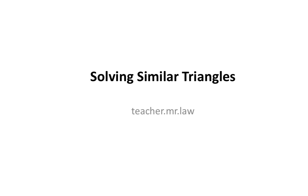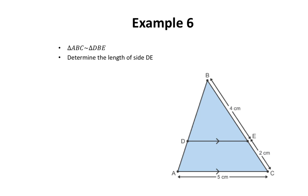In today's lesson, we'll be continuing to learn how to solve similar triangles. This is a continuation of the previous lesson. In our sixth example, we've been told that triangle ABC is similar to triangle DBE. We also want to determine the length of side DE.